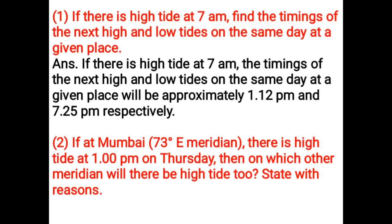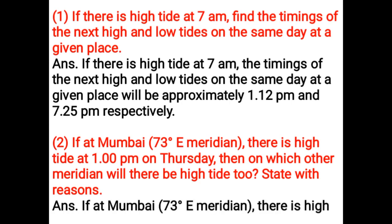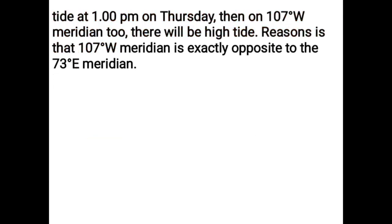If at Mumbai (73 degree east meridian) there is high tide at 1 pm on Thursday, on which other meridian will there also be high tide? If at Mumbai on the 73 degree east meridian there is high tide at 1 pm on Thursday, then on the 107 degree west meridian there will also be high tide, because the 107 degree west meridian is exactly opposite to the 73 degree east meridian.